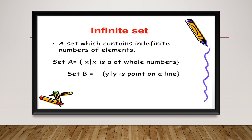We are unable to come up with a specific number of elements for an infinite set. We cannot determine the exact count of elements — for example, the set of all odd numbers or the points on a line. We are unable to determine what that count is.